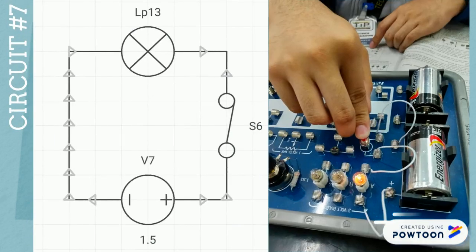Circuit number 7 has the same arrangement with circuit number 2. It is connected to a 1.5 volts dry cell and showed an average intensity of light.